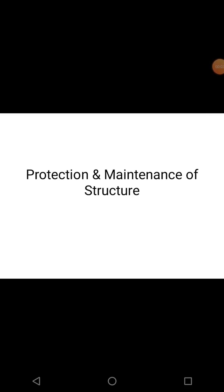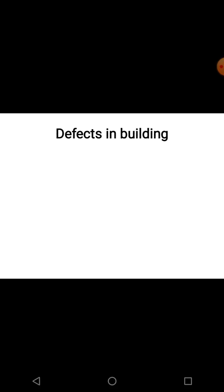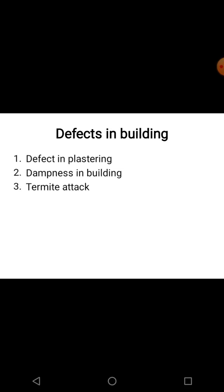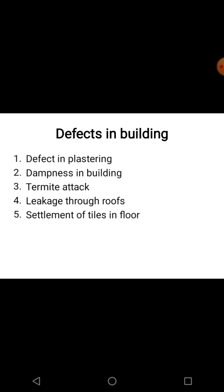Good morning students. In protection and maintenance of structures, today we are going to study building defects. There are five types of building defects you will observe: first, defect in plastering; second, dampness in the building; third, termite attack; fourth, leakage through roof; and fifth, settlement of floor tiles.